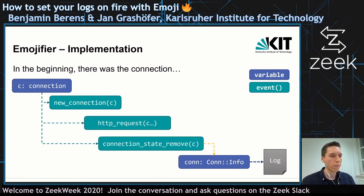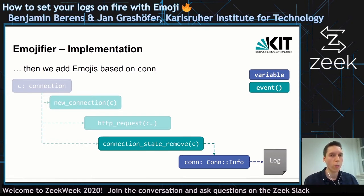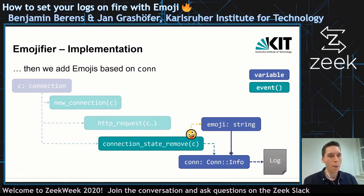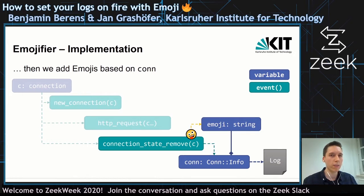To add emojis, we started with adding emojis based on the information we have in the connection. What we had to do is actually just handle the connection state remove event. We extended the coninfo record with a new string that will represent the emojis and put the emoji in there based on that event.